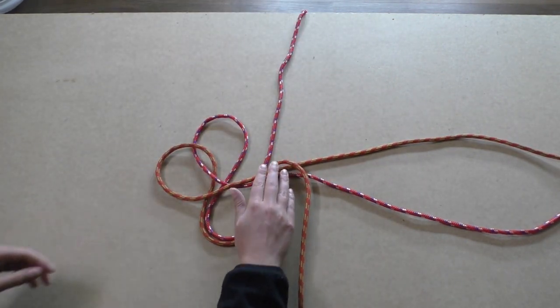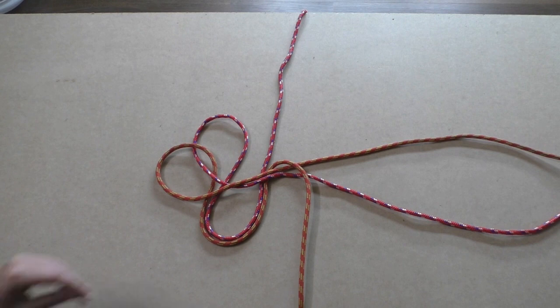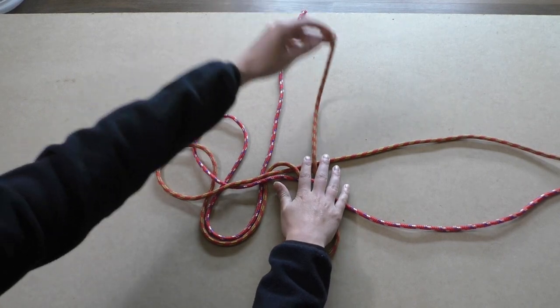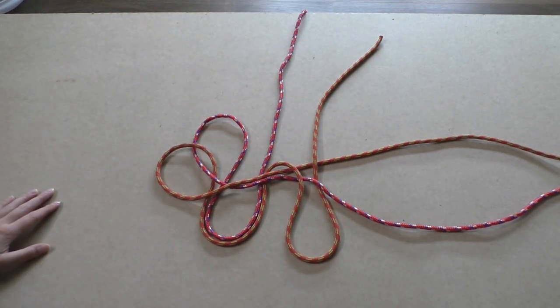Take the upper end of the orange rope and lay it downwards over the lower loose ends. Take it back up by leading it underneath the red rope and over the orange rope.